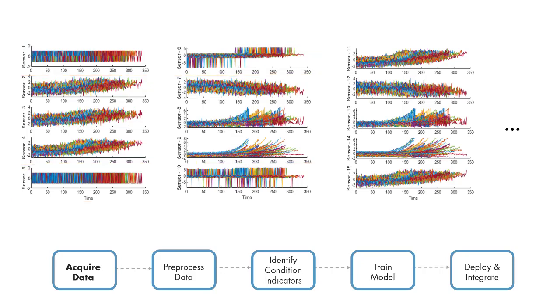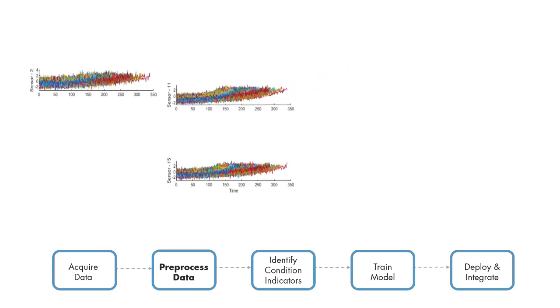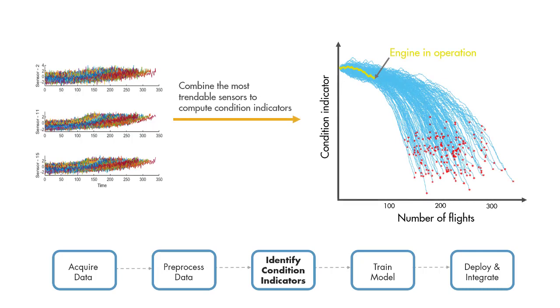So, in the preprocessing step, data reduction is performed by selecting only the most trendable sensors and combining them together to compute condition indicators. In this video, we're not going to discuss computations performed in these steps, but you can check out the links given in the video description to find out more on different data reduction techniques.